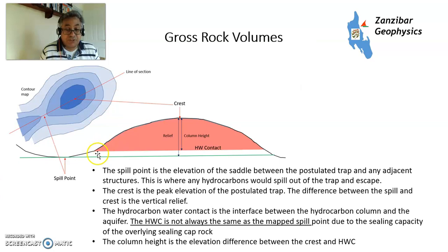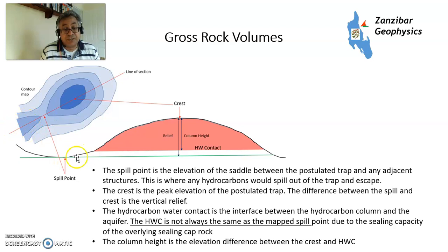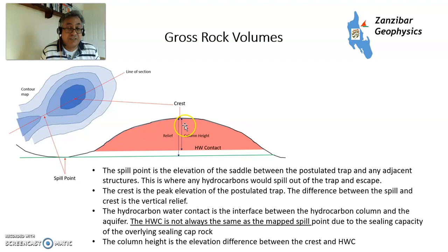Some terms here: on a cross-section and contour map, the crest is the very top of the structure. The spill point is the point at which hydrocarbons would migrate outside the trap and spill into another area. Your hydrocarbon-water contact is either at the spill point or above it, depending on seal capacity. Column height is the height between the hydrocarbon-water contact and the crest, and in certain situations where that height is very large, it may breach the seal — I have a separate video on seals and how they work.